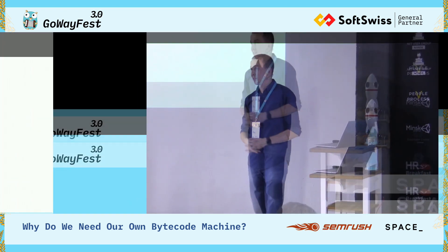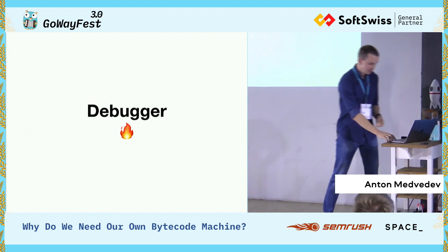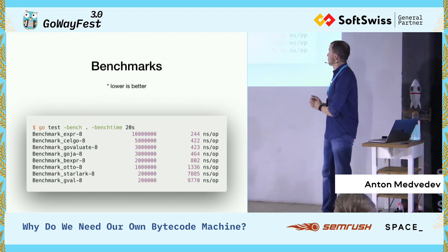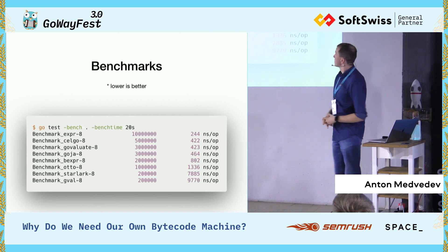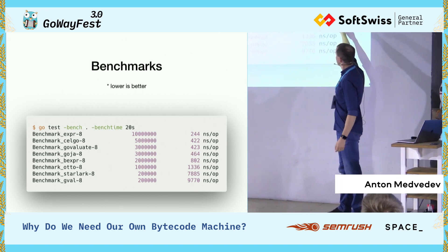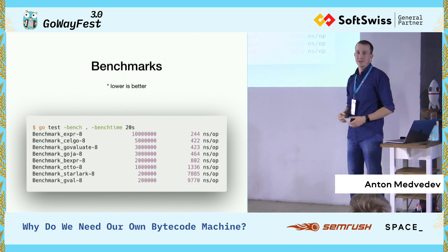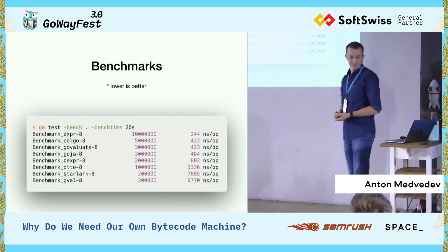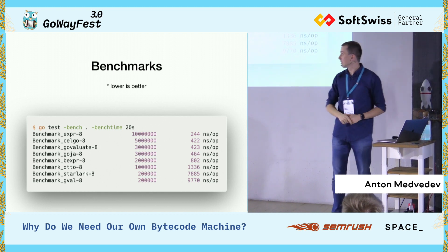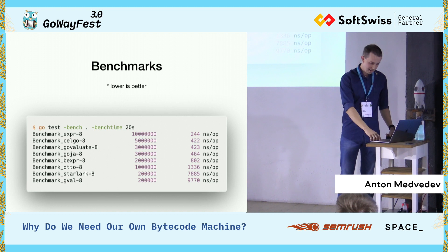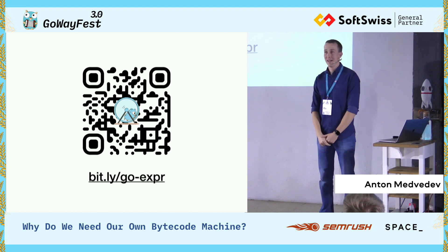Last year I was asked how it performs, but I didn't have any benchmarks. Now I have benchmarks, and Expr outperforms every other competitor — almost two times. You can notice that Celgo, Govaluate, and Goja perform at the same level because they all implement the same approach: tree traversal. And that's all I wanted to talk about today. Any questions?